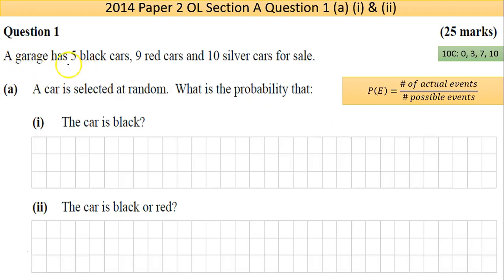Let's read through it. A garage has 5 black cars, 9 red cars, and 10 silver cars for sale. So 5, 9, 10. First thing I'll do before doing anything is add those, 19 and 5 is 24. So I'll put 24 here, you do the calculation if you wanted 5 plus whatever, but that's going to get me the attempt here.